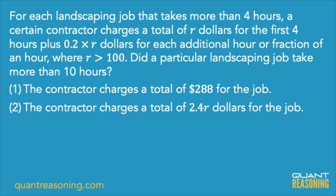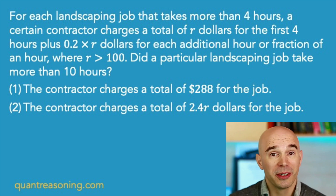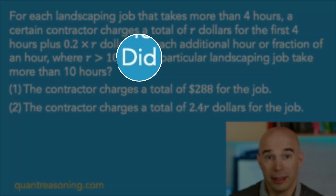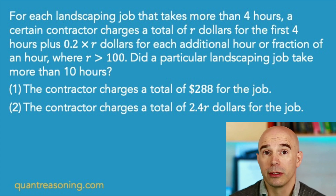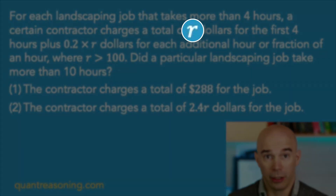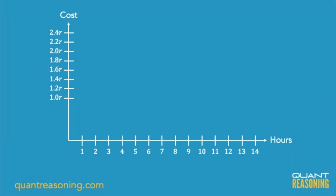Now let's go to an official GMAT question — I recommend you pause the video, try it on your own, then come back. This is a yes-no data sufficiency question, and I can tell based on the word 'did' — either it did or it didn't. We have a landscaping job that takes more than four hours. For the first four hours the contractor charges R. We can draw a graph with time on the x-axis: the cost starts at R and stays at R up to four hours. Once we pass four hours, the cost jumps to 1.2R until five hours, then 1.4R until six hours, and so on — every hour it goes up by 0.2R. It's a stepwise graph, and the question asks whether the job took more than ten hours.